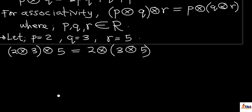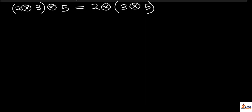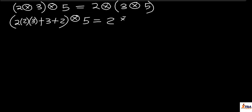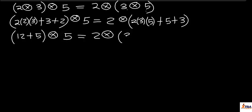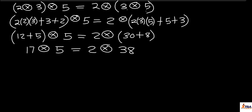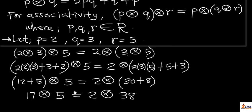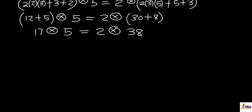Using the formula 2pq + q + p: for (2 ⊕ 3), p = 2 and q = 3, giving 2×2×3 + 3 + 2 = 12 + 5 = 17. So the left side becomes 17 ⊕ 5. For (3 ⊕ 5), p = 3 and q = 5, giving 2×3×5 + 5 + 3 = 30 + 8 = 38. So the right side becomes 2 ⊕ 38.